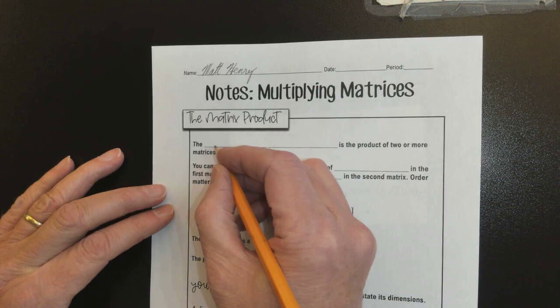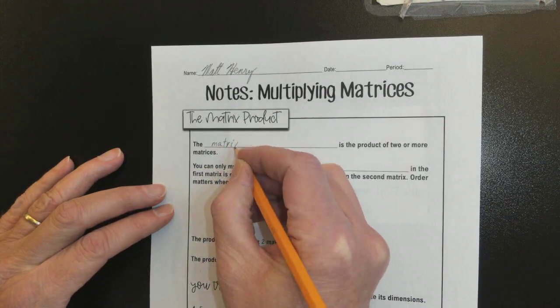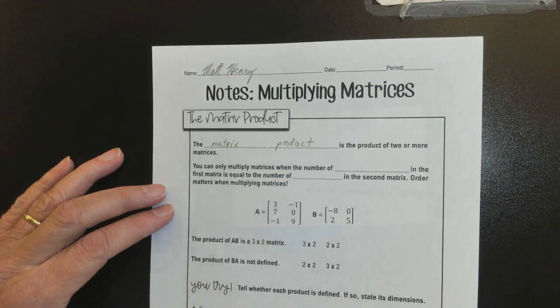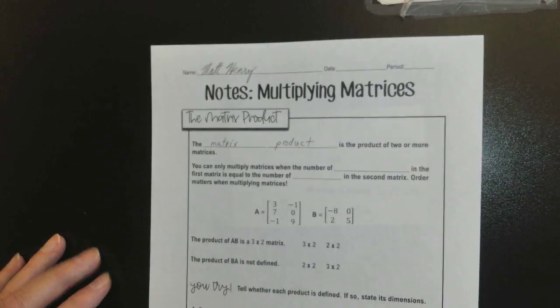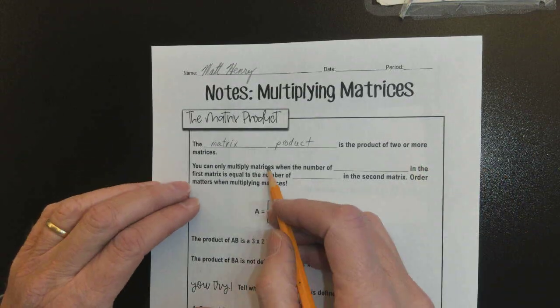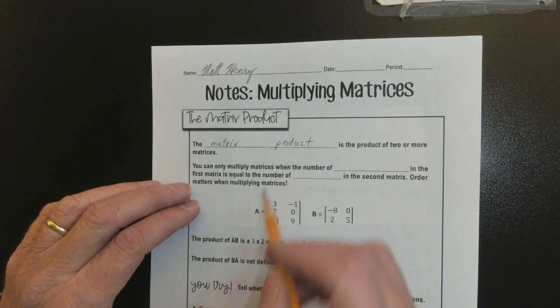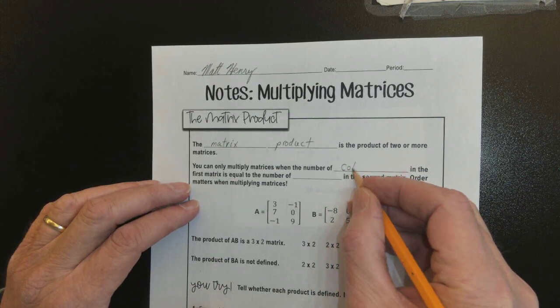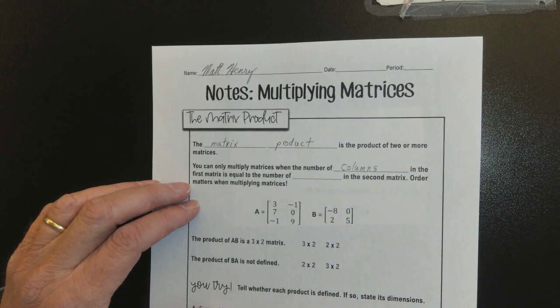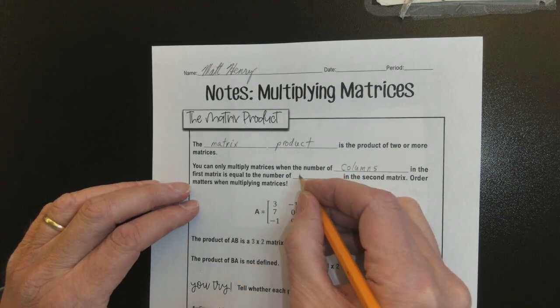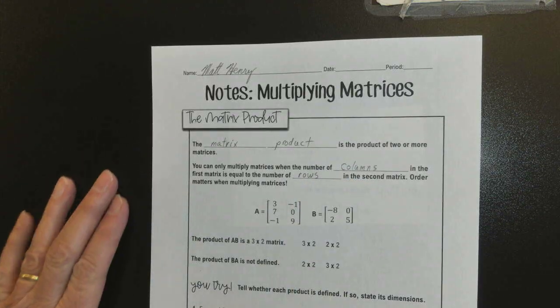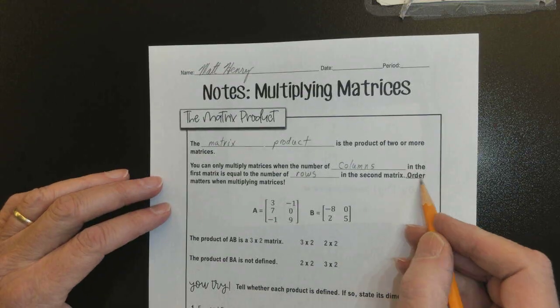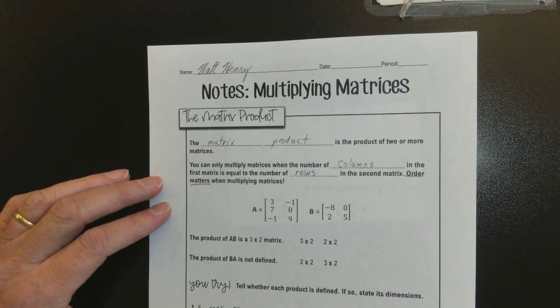Matrix product. The matrix product is the product of two or more matrices. You can only multiply matrices when the number of columns in the first matrix is equal to the number of rows in the second matrix. There's got to be that match. Order matters when multiplying matrices.